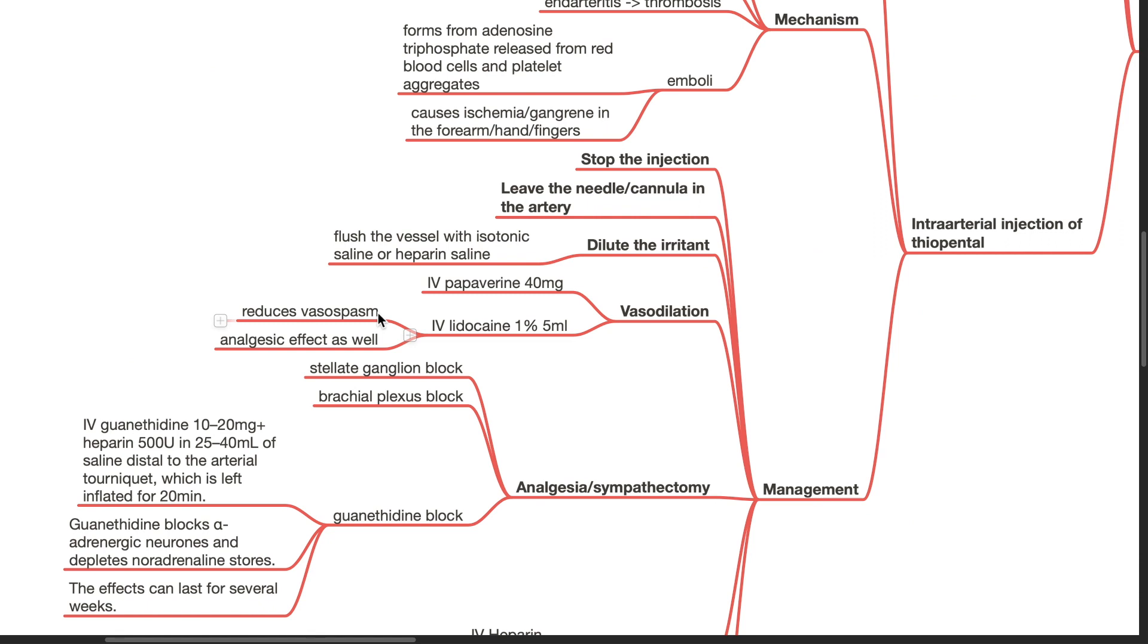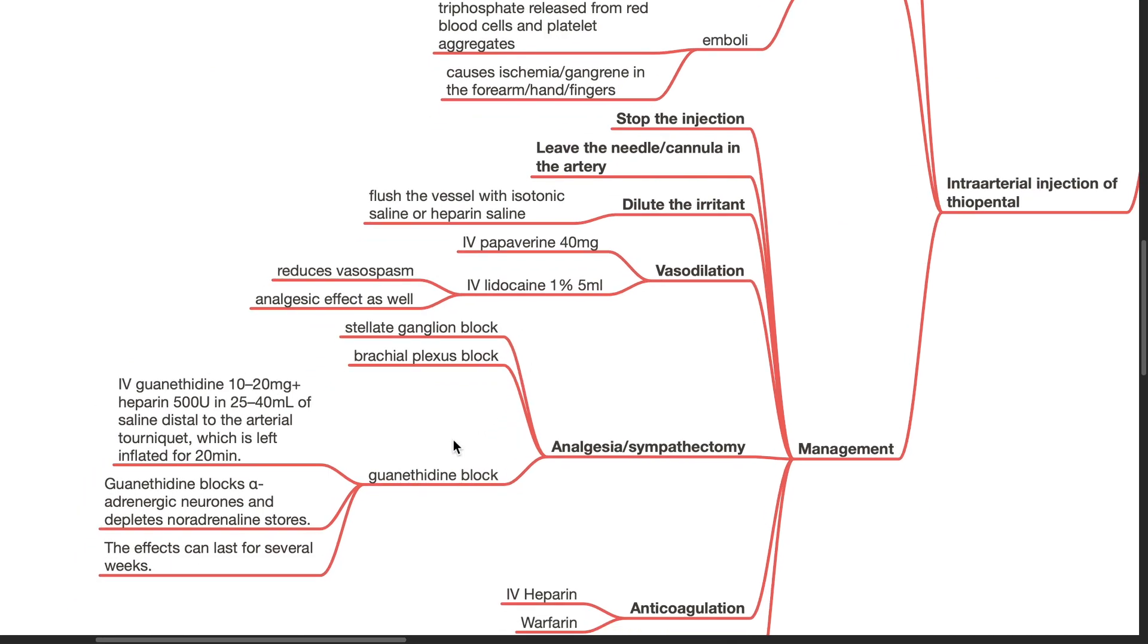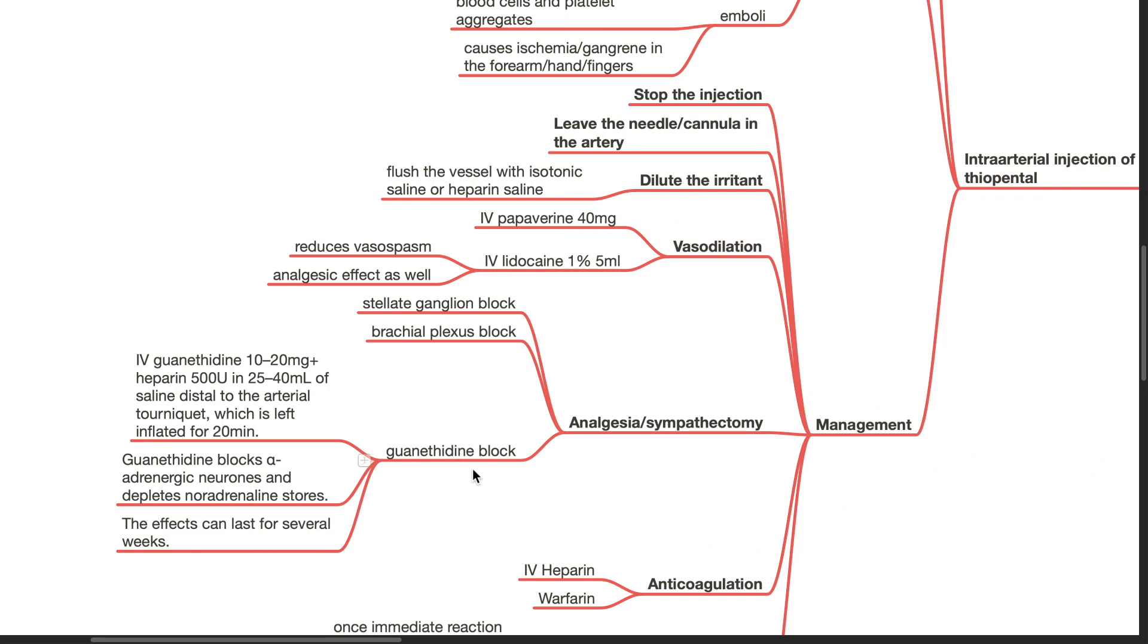Analgesia and sympathectomy using stellate ganglion block, brachial plexus block or guanethidine block. For guanethidine block, IV guanethidine 10 to 20 mg plus heparin 500 units in 25 to 40 mL of saline distal to the arterial tourniquet which is left inflated for 20 minutes. Guanethidine blocks alpha-adrenergic neurons and depletes noradrenaline stores. The effect can last for several weeks.